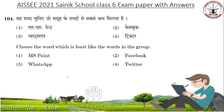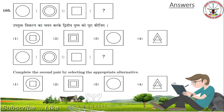Choose the word which is least like the words in the group. Answer: MS Paint. Complete the second pair by selecting the appropriate alternative. Answer is Option 2.